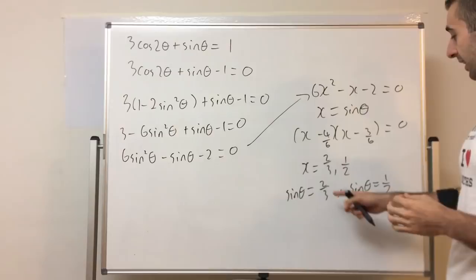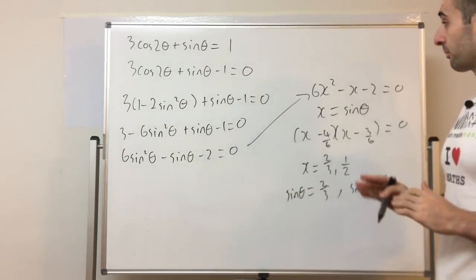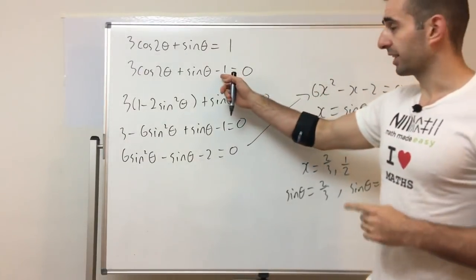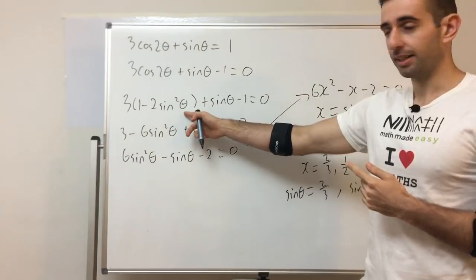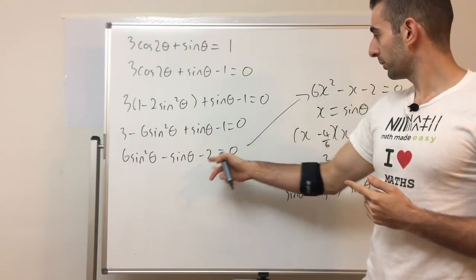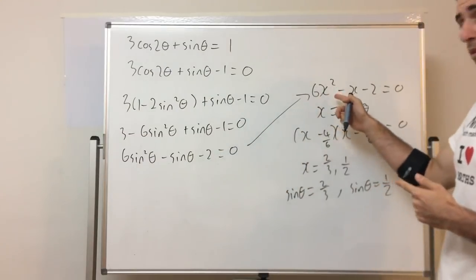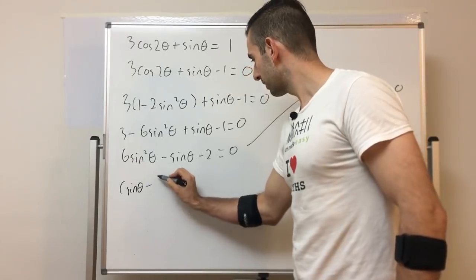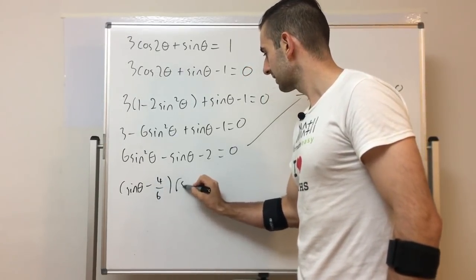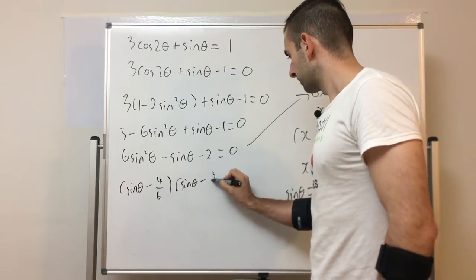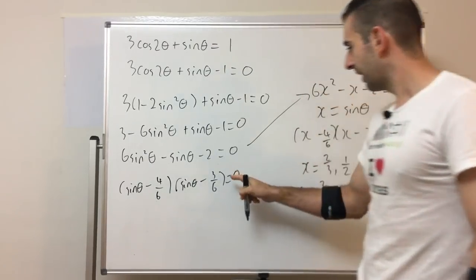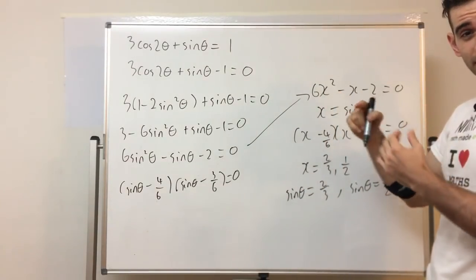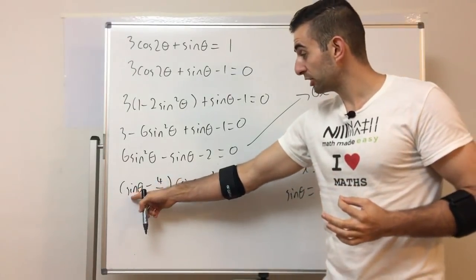Now I've got sinθ = 2/3 and sinθ = 1/2, I can just use the calculator — shift sine — to get the value of θ. That's it for this example. Follow the flowchart: bring to one side, can you factorize? No — use appropriate identity. Can you factorize now? Yes. Done. As a more advanced student, you won't need to substitute x = sinθ; you can factorize directly using sinθ.